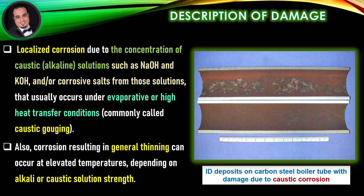Description of damage: Localized corrosion due to the concentration of caustic, alkaline solutions such as sodium hydroxide and potassium hydroxide, and/or corrosive salts from those solutions, that usually occurs under evaporative or high heat transfer conditions. Commonly called caustic gouging. As illustrated in the figure, inside diameter deposits on carbon steel boiler tube show damage due to caustic corrosion.